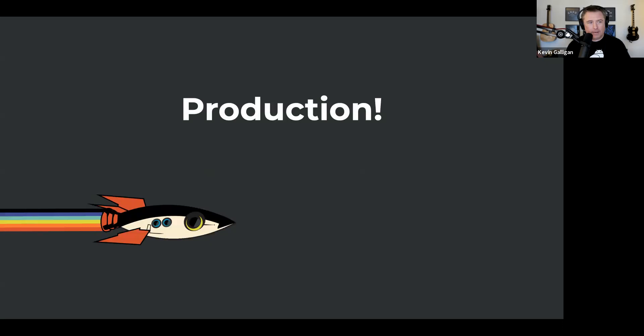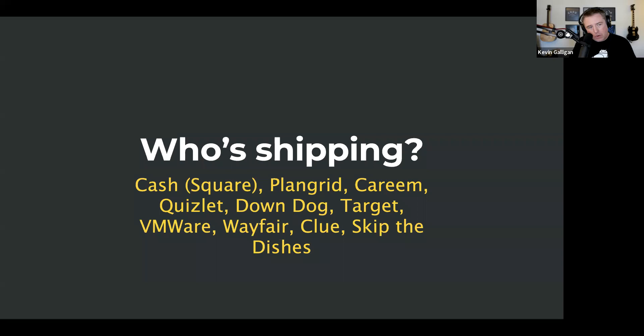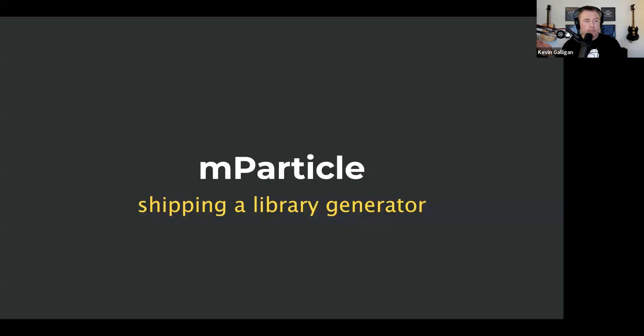Who's in production now? A year or two ago, if anybody was in production you would hear about it. Now, if you don't write a blog post you don't know, because it's just shared code. Cash App, Square, PlanGrid, Quizlet, Down Dog — it's a yoga app — Target, VMware, and more. People are definitely putting it into production. Particle is shipping an analytics library generator built on KMP.